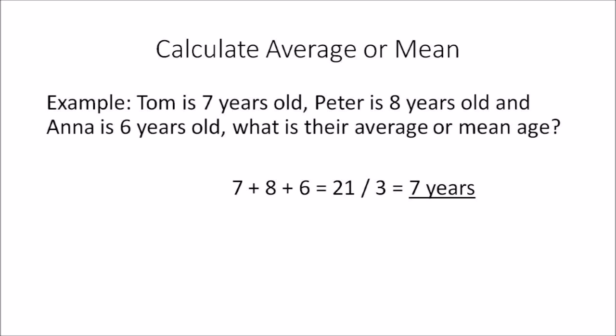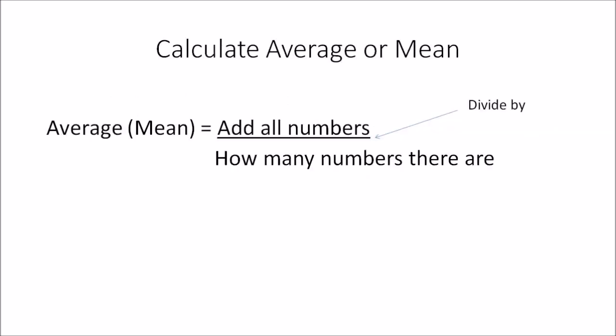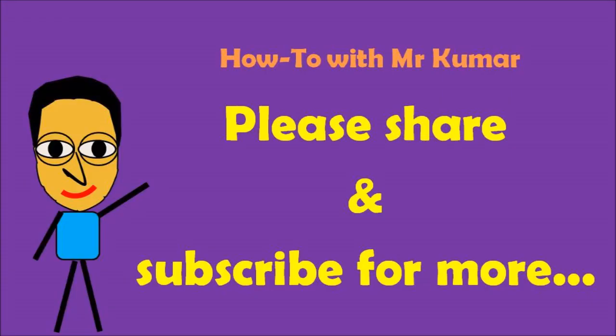The same concept and formula applies in all types of average or mean questions. If a question asks for the average or mean, just add all the numbers or figures provided in the question and divide by how many numbers there are. This works for word problems or simple problems. If you liked the video, please share and subscribe for more — thank you for watching.